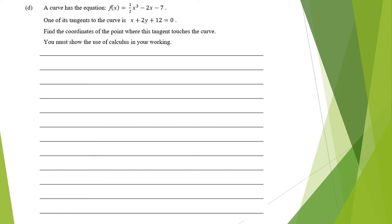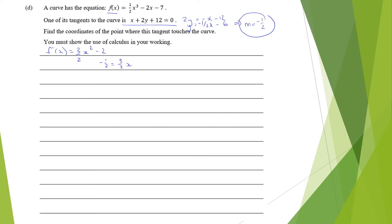This curve has a tangent. We can write the tangent as 2y equals negative x minus 12, or y equals negative one-half x minus 6. This means the gradient is negative one-half. So f'(x) equals 3/2 x squared minus 2, and setting it equal to negative one-half: negative one-half equals 3/2 x squared minus 2. Adding 2 to both sides gives 3/2 equals 3/2 x squared, so x squared equals 1.